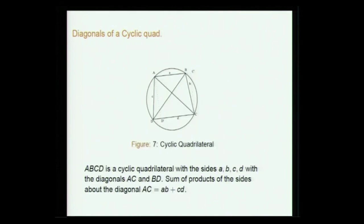The translation: the sums of the product of the sides about both the diagonals being divided by each other, multiply the quotients by the sum of the products of the opposite sides. The square roots of the results are the diagonals in a trapezium. This is for a cyclic quadrilateral ABCD with sides a, b, c, d and diagonals AC and BD.